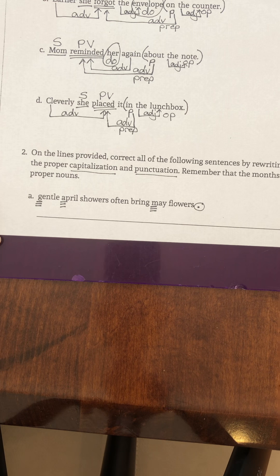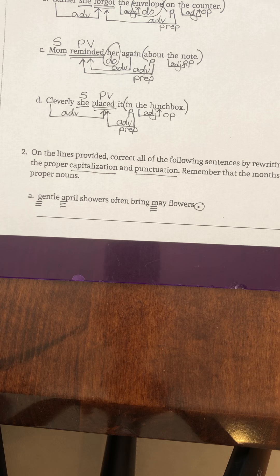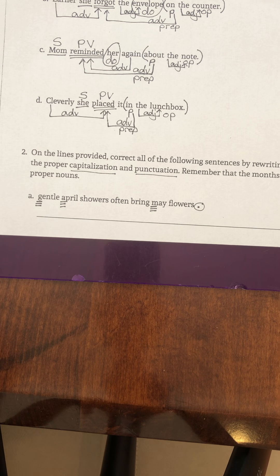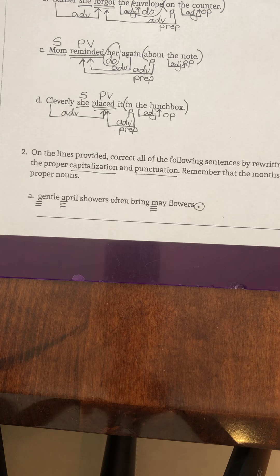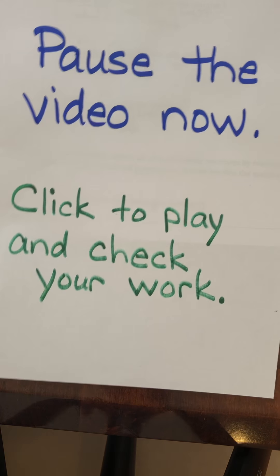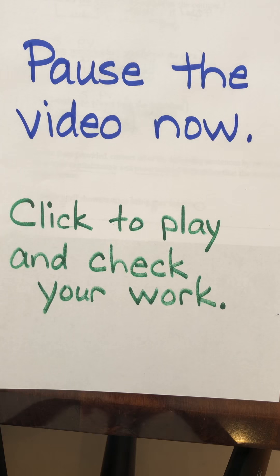You are going to move on and do B, C, and D before you come back to me. Names of types of flowers are not capitalized — you're only looking for the beginning of the sentence, the months of the year, and the end mark. You will do B, C, and D and then come back to check your work. Do that now.